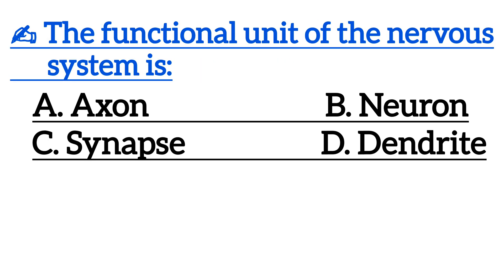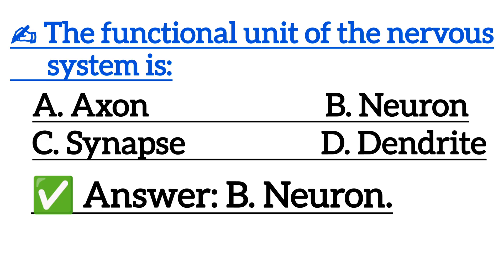The functional unit of the nervous system is — correct answer is option B: neuron.